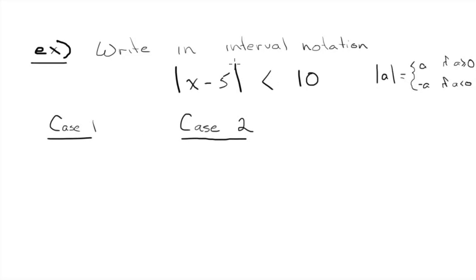But remember, in this case, A is an actual expression. A is equal to x minus 5. So case 1 would be if A is bigger than or equal to 0, which means x minus 5 is bigger than or equal to 0. So just to simplify that case, that would mean x is bigger than or equal to 5. Okay, so case 1 occurs when x is bigger than or equal to 5.